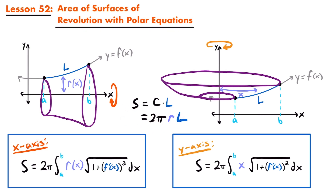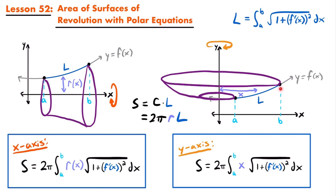We get from that idea to these formulas by noting that the arc length in the rectangular coordinate system is the integral from a to b of the square root of 1 plus f′(x)² dx. Replacing L with this definite integral forms the two formulas. The radius is included within the integral because it depends on where you are along the arc length — it is not a constant value.